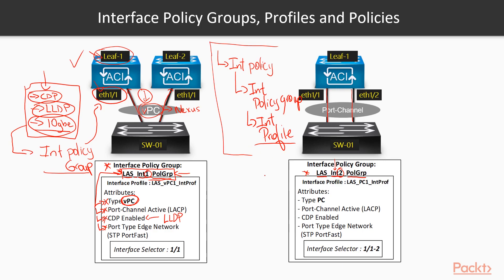In our second scenario, we have a port channel with a policy group of LAS interface two policy group, which has the following policies. By default in ACI, you're going to have some defaults for each one. But if you want to make custom objects, you can go ahead and do it, and we're going to do it in this video.